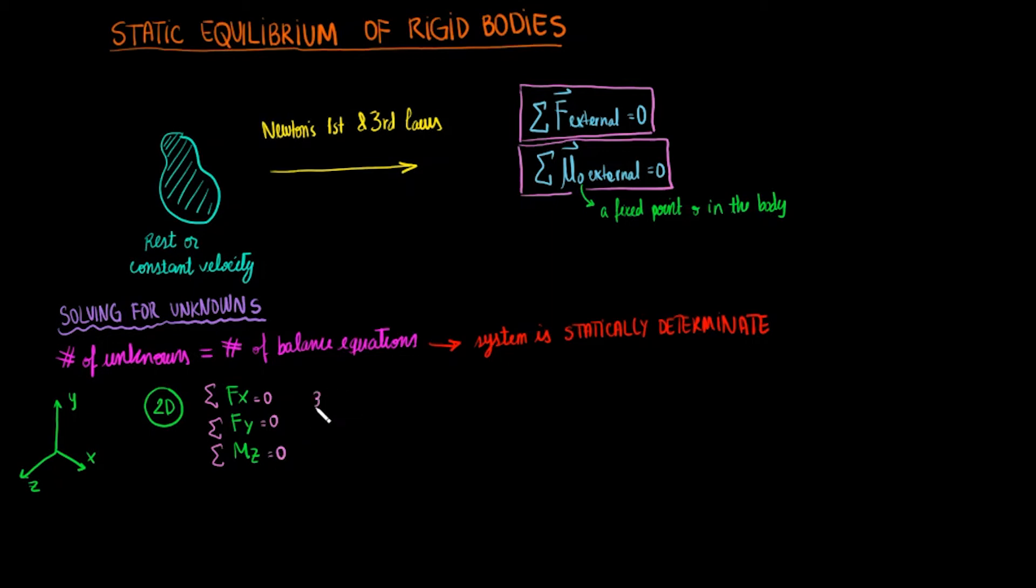Thus, we can only have up to three balance equations in 2D. This means that we can solve for up to three unknowns.